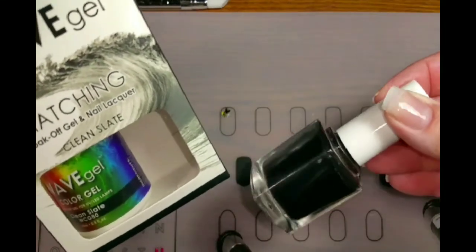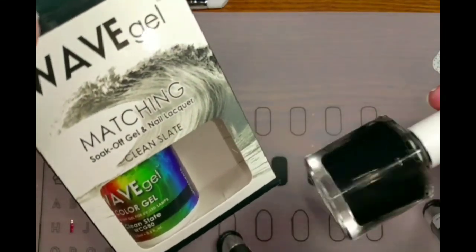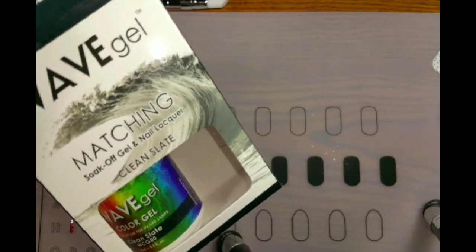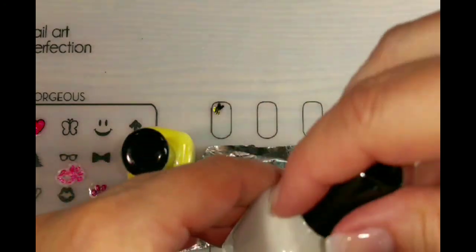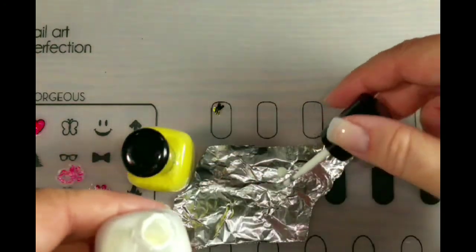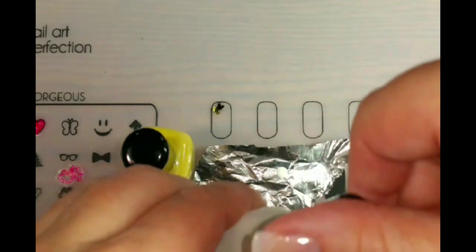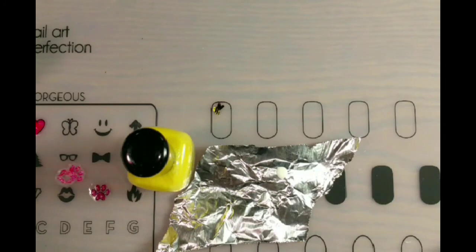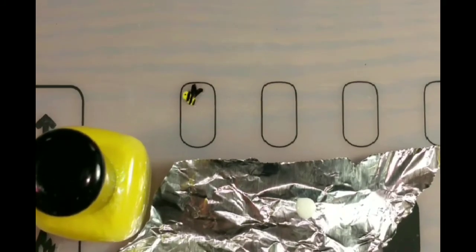And I'm using the black lacquer paper from Wave Gel. And I have a little piece of tin foil that I just put a little drop of polish on. I just like to do that because then I don't have to clean up anything and just throw it in trash.